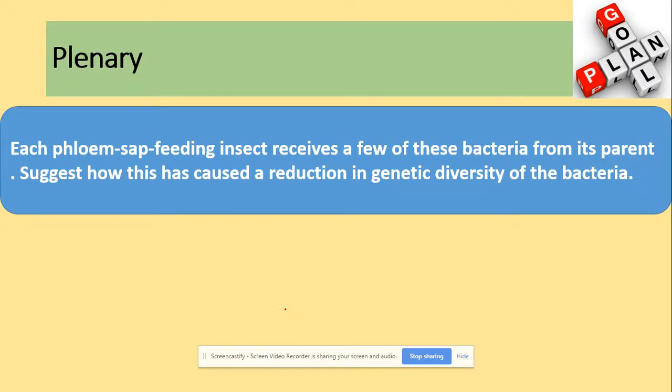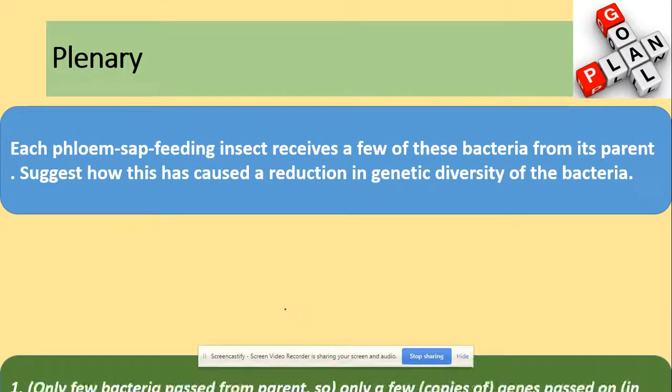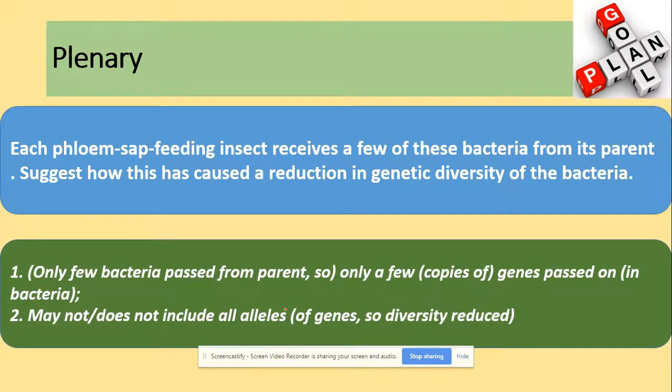The next question asks how a factor caused a reduction in genetic diversity of bacteria. Only a few bacteria are passed from parents, so only a few copies of genes will be passed on, and these might not include all of the alleles — hence the genetic diversity will be reduced. Remember, it's all about the alleles, not genes. If you're talking about something being reduced, focus on alleles.